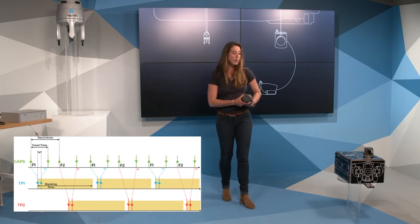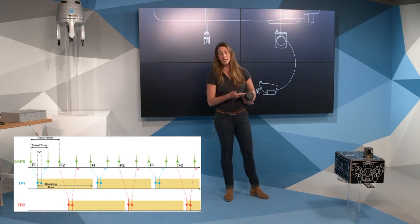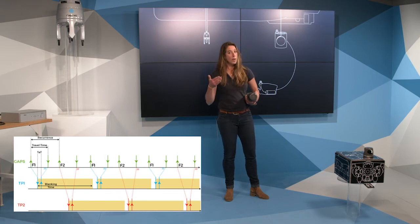You can interrogate the ROV on F1 frequency and you can interrogate the TMS on F2 frequency. Then every one second, you will do F1 and then F2.